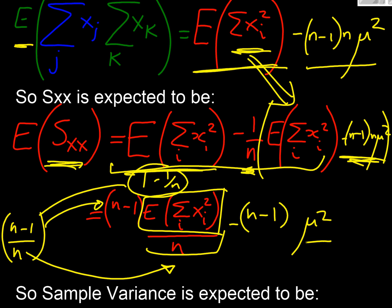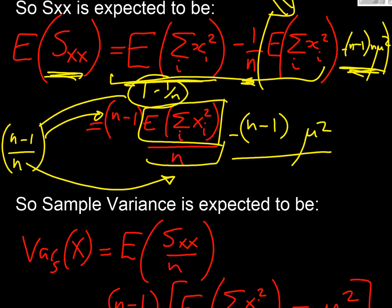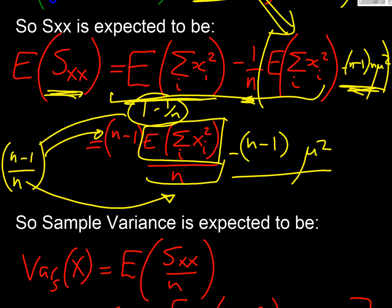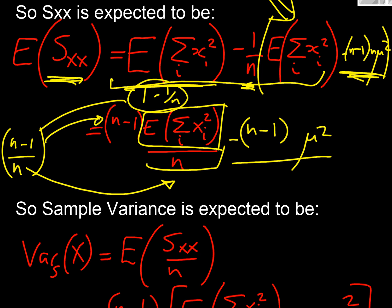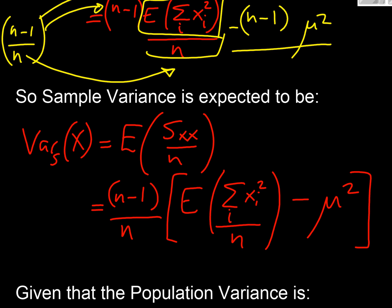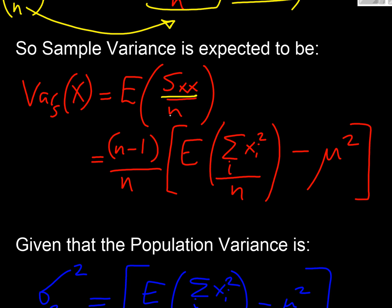So in effect what we've done is we've found the sample variance here. There we are, that's our expected value of Sxx, so if we wanted to look at that, we would have our expected value of Sxx and we'd be dividing it by n in the usual way.